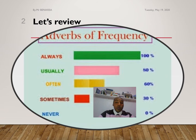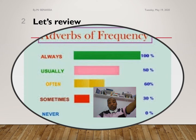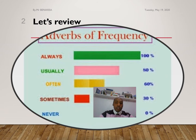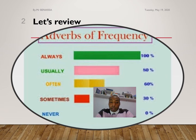'Often' — something that you do regularly, but not as frequently as usually. 'Sometimes' — from time to time you do something, so you use 'sometimes.' With 'never,' you never do it — you never do something, so you use 'never.'